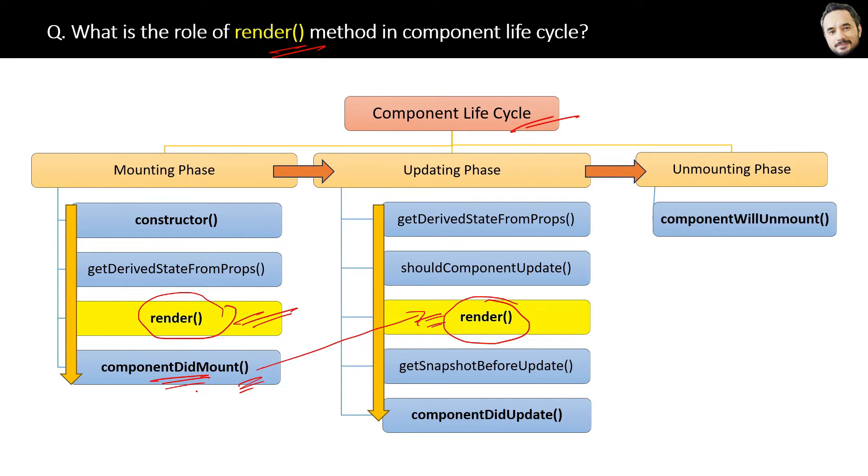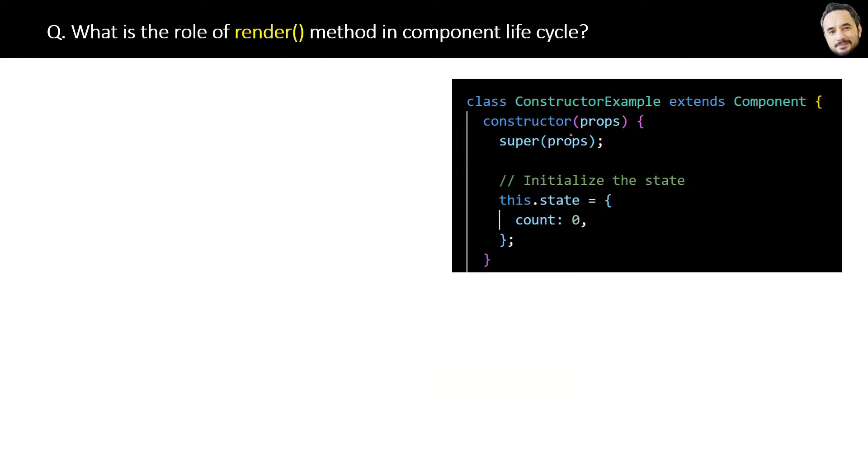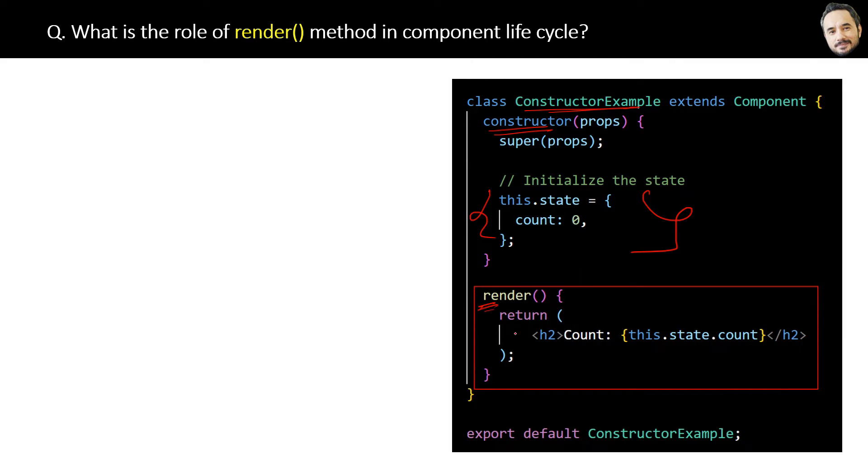Let's quickly see the component code example. Here is the same previously explained constructor code in a component which is responsible for initializing the component, and here is the render method which is just displaying this h2 element with the state count value set above in the constructor.